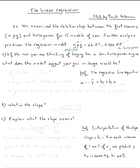It says if the car you are thinking of buying has a 200 horsepower, so think of this as your x, so this is the x value and this is ŷ. The definition is right here. ŷ equals b₀ plus b₁x.